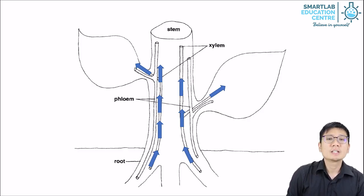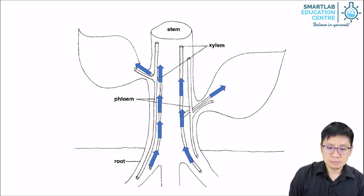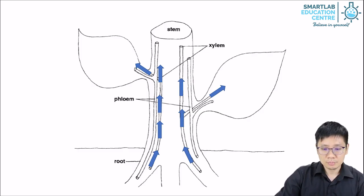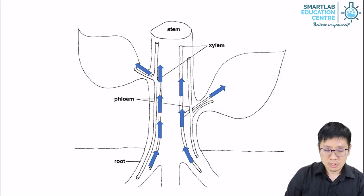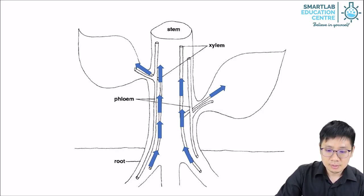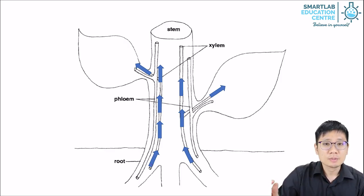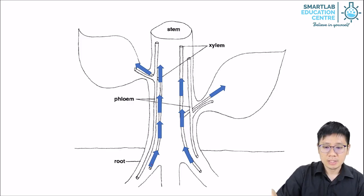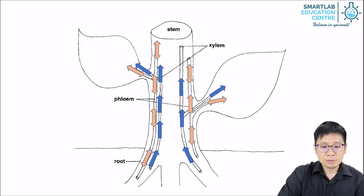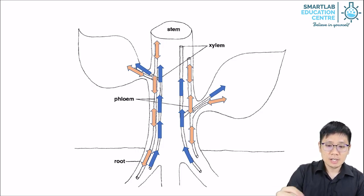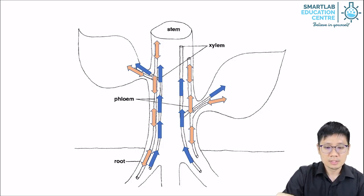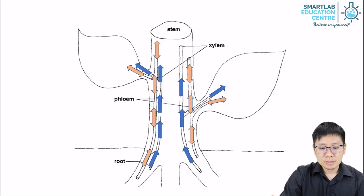The xylem is responsible for bringing water up from the roots. The roots absorb water and mineral ions, and the xylem only transports upward. In this picture, the xylem is on the inside — the inner part of the stem. The phloem, on the other hand, transports food or manufactured food from the leaves up and down the stem, and it runs on the outside.